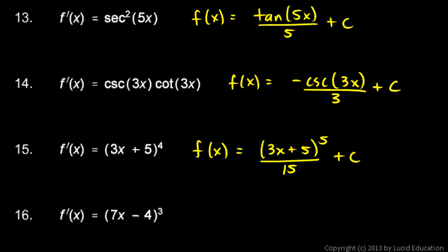Just put a 15 down there. And now, if you take the derivative of this, you would have 5 times 3x plus 5 to the fourth times 3, divide it by 15, and that 15 would cancel out the 5 and the 3, and you'd have that.